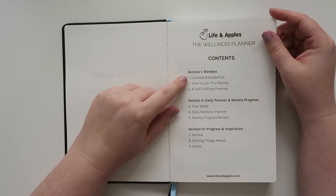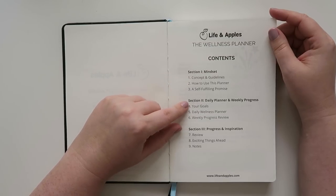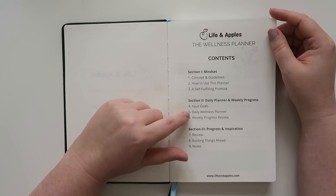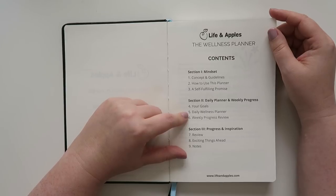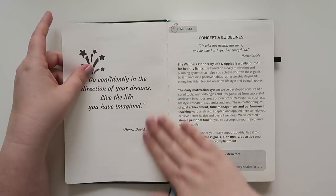All right. So it has different sections. So section one is mindset, concepts and guidelines, how to use this planner, a self-fulfilling promise. Section two is a daily planner and weekly progress. Your goals, daily planner, wellness, daily wellness planner, weekly progress review. And then section three is your progress and inspiration, a review, exciting things ahead and notes. Cool. All right.